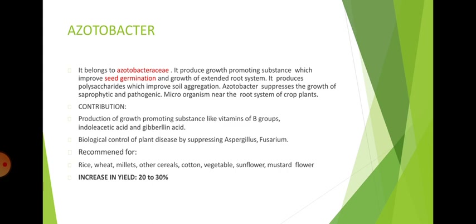Azotobacter belongs to Azotobacteriaceae. It produces growth promoting substances which improve seed germination and growth of an extended root system. It produces polysaccharides which improve soil aggregation. Azotobacter suppresses the growth of saprophytic and pathogenic microorganisms near the root system of crop plants. Its contributions include production of growth promoting substances like vitamins of the B group, indoleacetic acid, and gibberellic acid, and biological control of plant disease by suppressing Aspergillus and Fusarium. It is recommended for rice, wheat, millets, other cereals, cotton, vegetables, sunflower, and mustard, with an increase in yield of 20 to 30%.